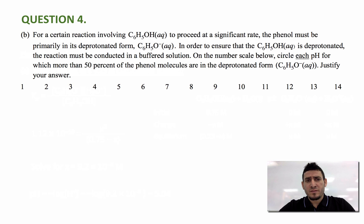The question says, for a certain reaction involving phenol to proceed at a significant rate, the phenol must be primarily in its deprotonated form, which is the phenolate. In order to ensure that the phenol is deprotonated, the reaction must be conducted in a buffered solution. On the number scale below, circle each pH for which more than 50% of the phenol molecules are in the deprotonated form. Justify your answer.